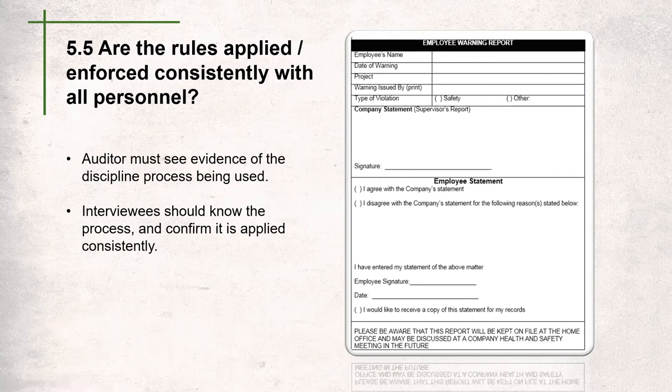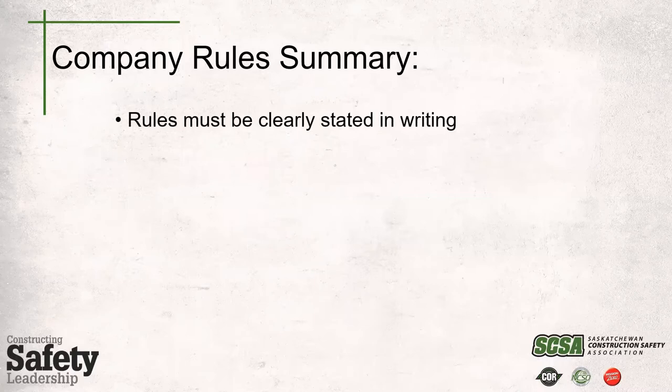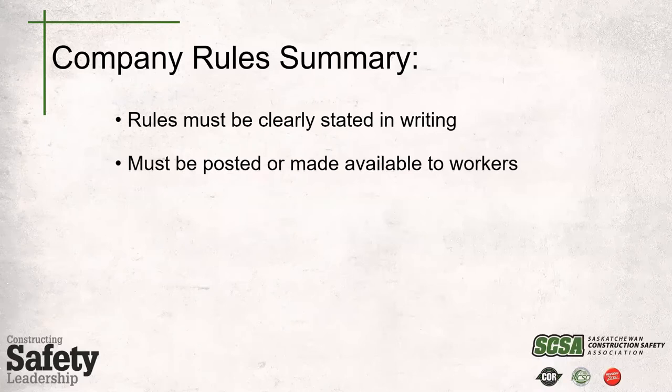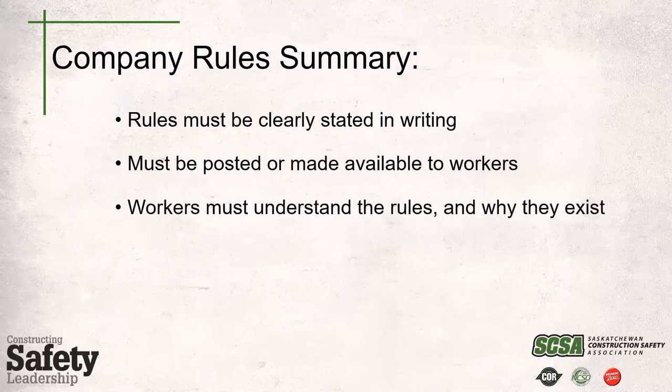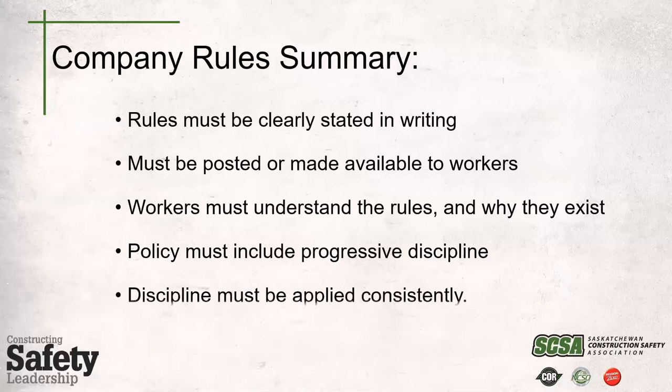That sums up company rules. To summarize: rules must be clearly stated in writing and posted or made available to workers at all times. Workers must understand the rules and the reasons why they exist. Rules must include a policy or steps on progressive discipline, and the auditor must see evidence that discipline is applied consistently among all personnel.